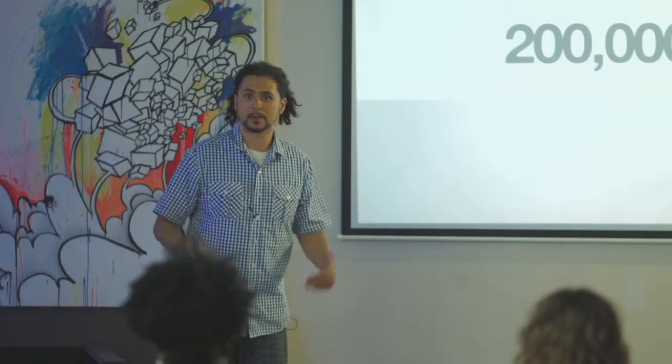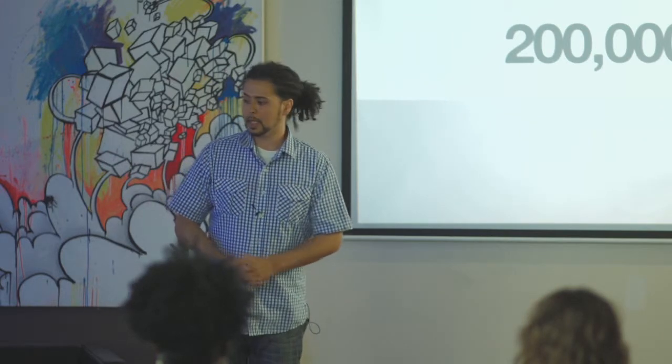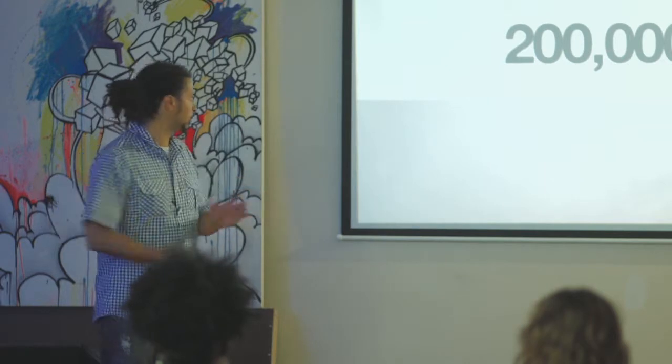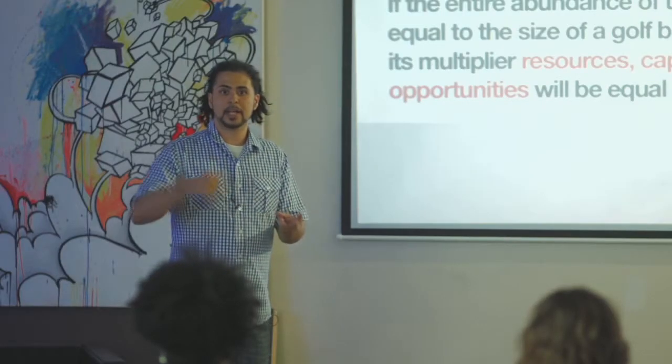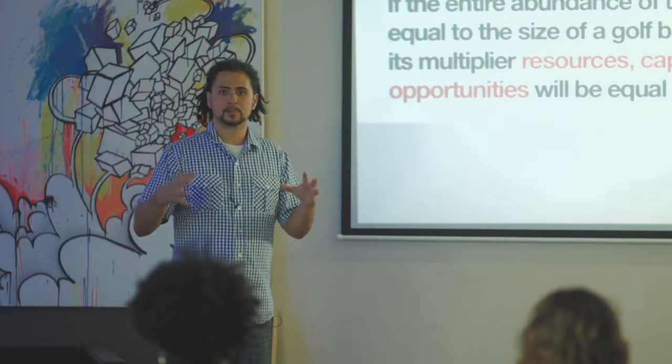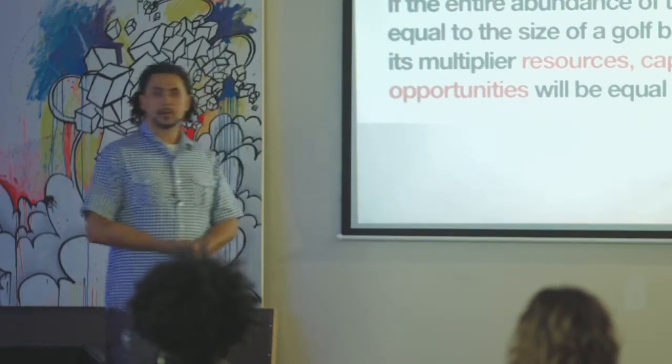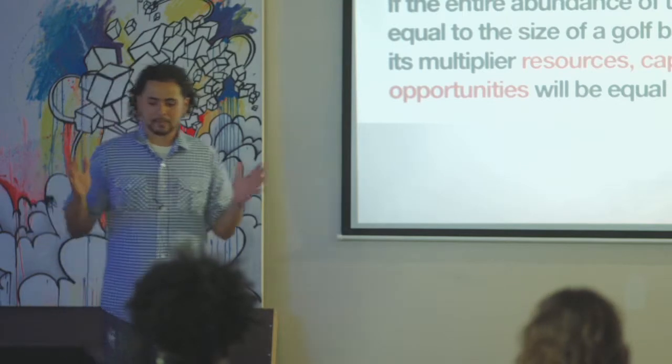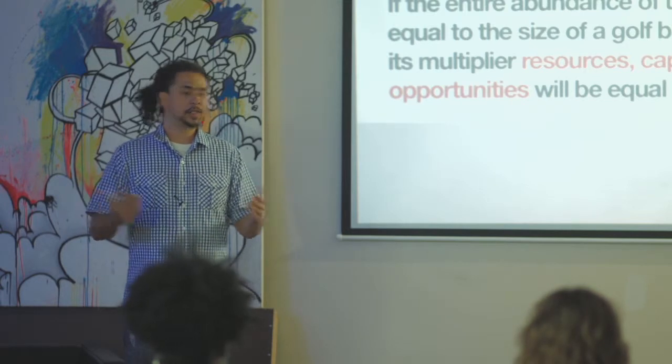You can talk to the smartest men on the earth, and they will tell you some things about what they believe, and some of their predictions will be true. But the truth is you do not know, and we do not know because it's happening so fast. We're exploring it as we go. So to put it into scale, if the entire abundance of the Internet today was equal to the size of a golf ball, every tweet, every web page, every email, everything that's happening on the Internet was the size of a golf ball, by 2040, its multiplier resources, capabilities, and opportunities would be equal to the size of the sun. That's a lot of growth.